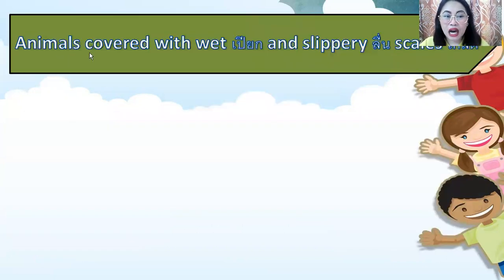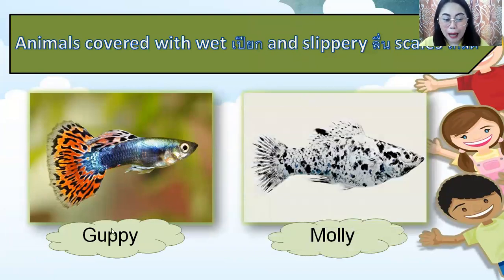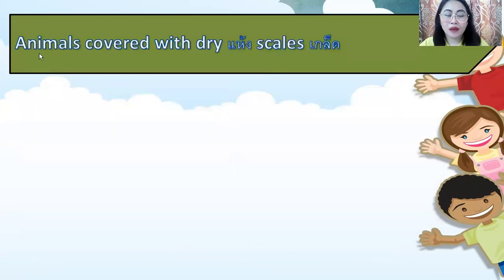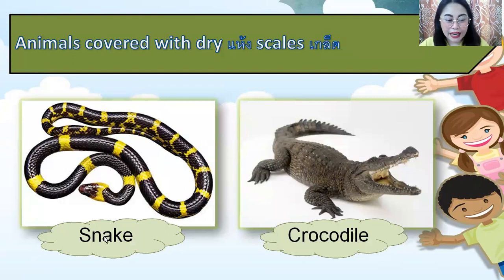Animals covered with wet and slippery scales — examples are guppy and molly. These are animals covered with wet and slippery scales. Animals covered with dry scales — examples are snake and crocodile, which are animals covered with dry scales.